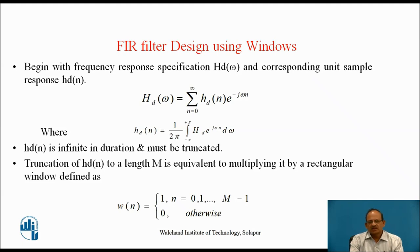Truncation of hd(n) to a length M is equivalent to multiplying it by a rectangular window, where the window function is defined as W(n) = 1 for n = 0 to M−1, and 0 otherwise.